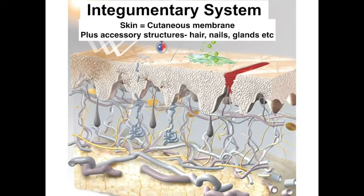The skin is also known as the cutaneous membrane. The integumentary system is the skin and its derivatives — accessory structures like hair, nails, glands, and other things.